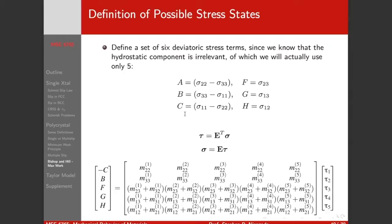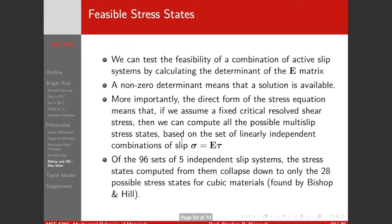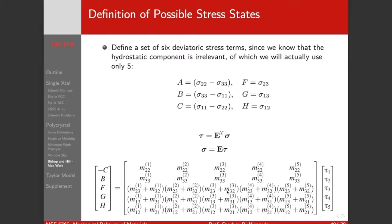What did Bishop and Hill do? They defined five deviatoric stress terms in a somewhat unusual way. The stress and resolved shear stress are expressed through the Schmitt terms — components of the Schmitt tensor. We can find these coefficients, though the mathematics is not super important. This is called the E matrix — it just contains all of the relevant Schmitt information.